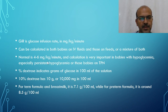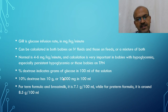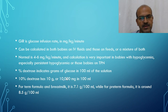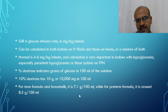For babies on TPN, the percent of dextrose indicates the grams of glucose in 100 ml of solution. So 10% dextrose has 10 grams (10,000 mg) in 100 ml, and 25% dextrose has 25 grams (25,000 mg) in 100 ml. For term formula and breast milk, it's approximately 7.1–7.5 grams per 100 ml, equivalent to about 7% dextrose, and for preterm formula it's around 8.5 grams per 100 ml — important when calculating GIR for feeds.